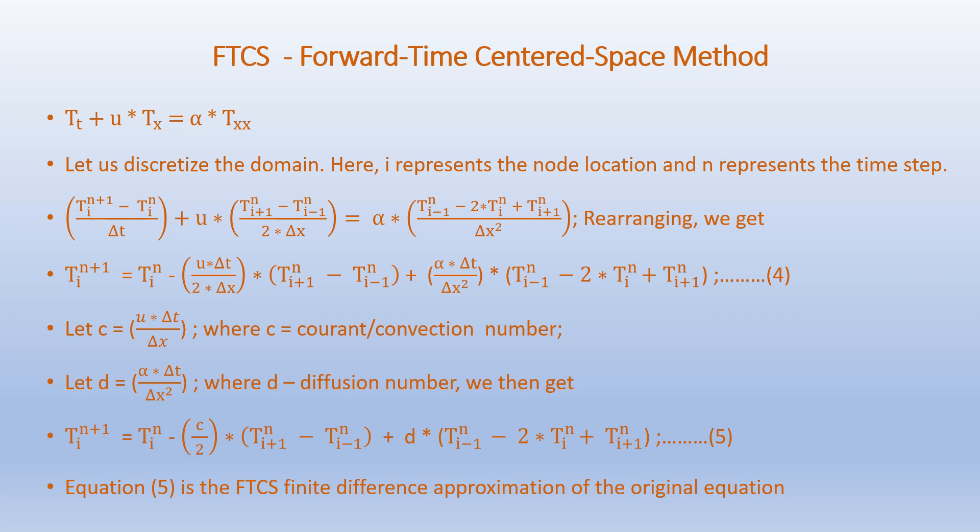We rearrange this equation where i represents the node location and n represents the time step. Defining the Courant number C equals u·delta_t over delta_x and the diffusion number D equals alpha·delta_t over delta_x², the final FTCS equation becomes: T_i^{n+1} equals T_i^n minus (C/2)·(T_{i+1}^n minus T_{i-1}^n) plus D·(T_{i-1}^n minus 2·T_i^n plus T_{i+1}^n). This is the final form of the FTCS finite difference approximation.